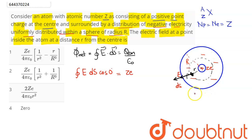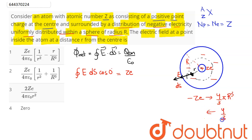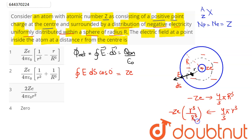The negative charge within radius r can be found using volume charge density: −ZE charge is distributed within volume (4/3)π·R³. So within volume (4/3)π·r³, the enclosed negative charge equals −ZE·(r³/R³).